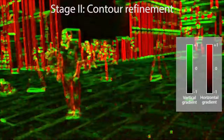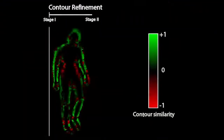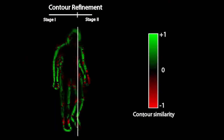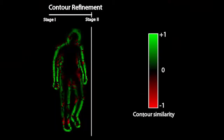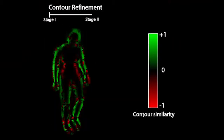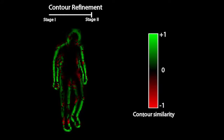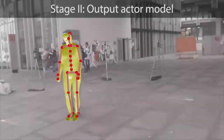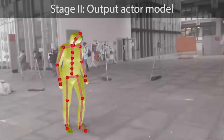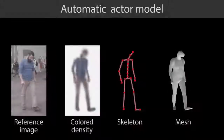The shape is optimized to maximize the per-pixel similarity of model contour and image gradients. Notice that arms, feet and torso are corrected and the overall similarity improves significantly. The output of our method is a fully rigged actor model including skeleton, color and surface mesh and the estimated 3D motion.